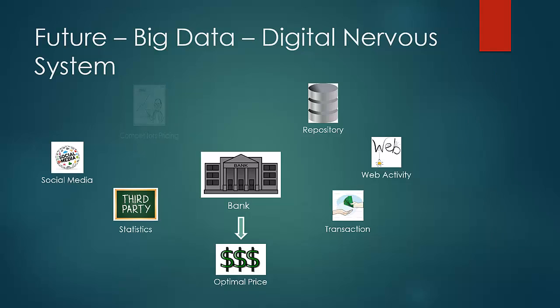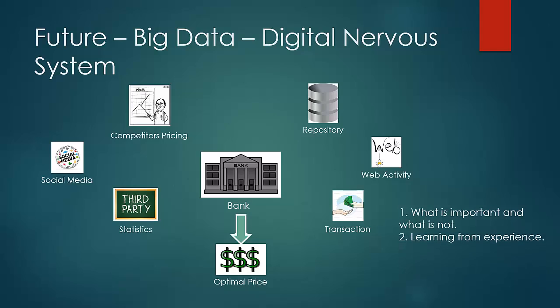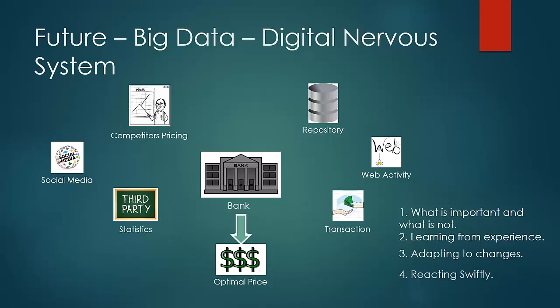Or suppose a competitor changes its price — the bank's price automatically changes to a new optimal value to maximize profits. This is a futuristic vision of a computer network that emulates the biological nervous system in the following characteristics: first, deciding what information is important and what is not; second, learning from experience; third, adapting to changes in its external environment; and fourth, reacting swiftly to advantageous or threatening situations.